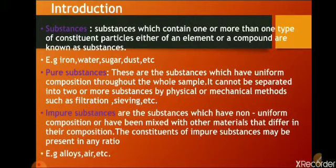An impure substance can be like muddy water. Air is an example of an impure substance — it has many constituents like pollution, smoke, dust particles, oxygen, carbon dioxide. Impure substances are substances which have non-uniform composition or have been mixed with other materials that differ in their composition. The constituents of impure substances may be present in any ratio. For example, alloys and air. An alloy is a mixture of different types of metals.